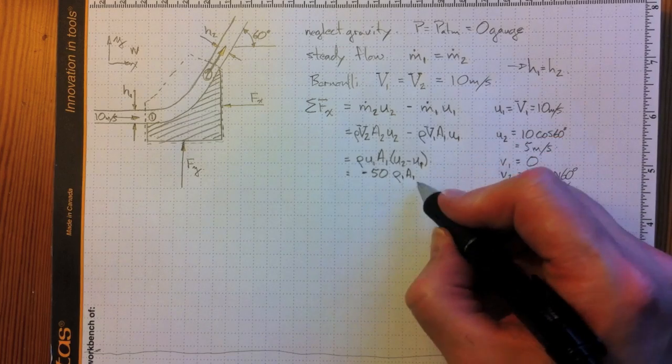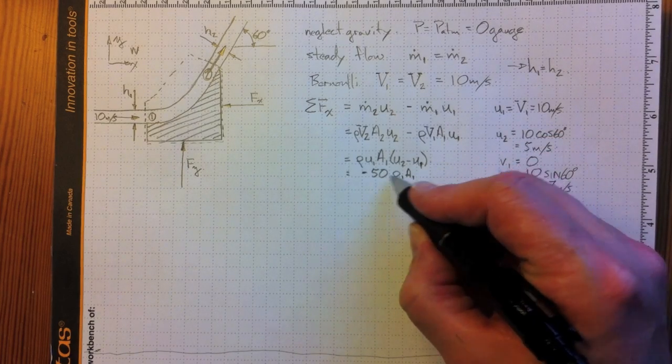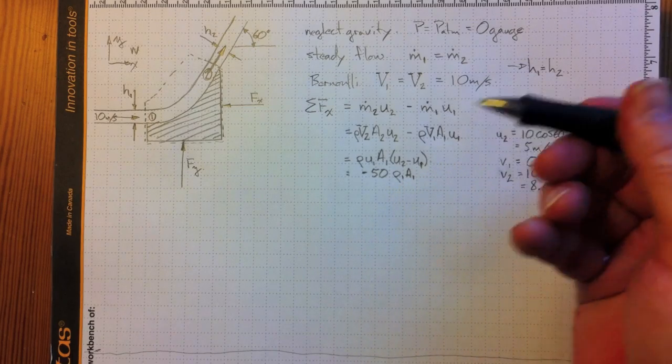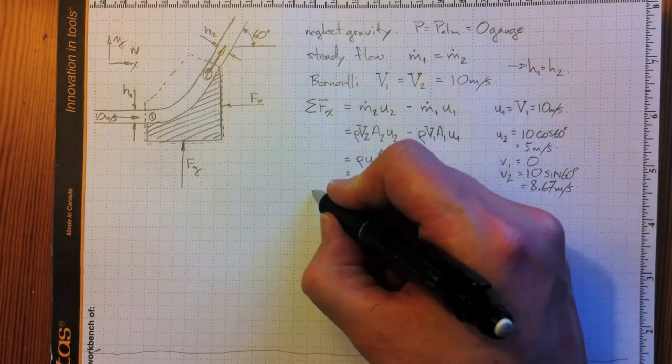So, the sum of the forces acting in the x direction, negative 50 times the density times the area, so that'll give us mass flow-related information. And, that's a negative x force.